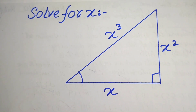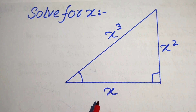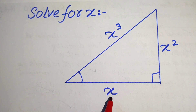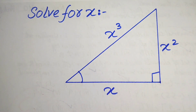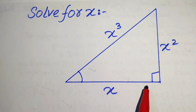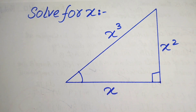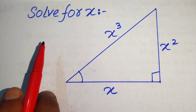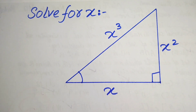Hello everyone, welcome. We will solve a nice math olympiad geometry problem. We have a right triangle in which the length of each side is x, x squared, and x cubed respectively. This is the right angle, and this is the unknown angle in this right triangle, and we need to solve this problem for the values of x.